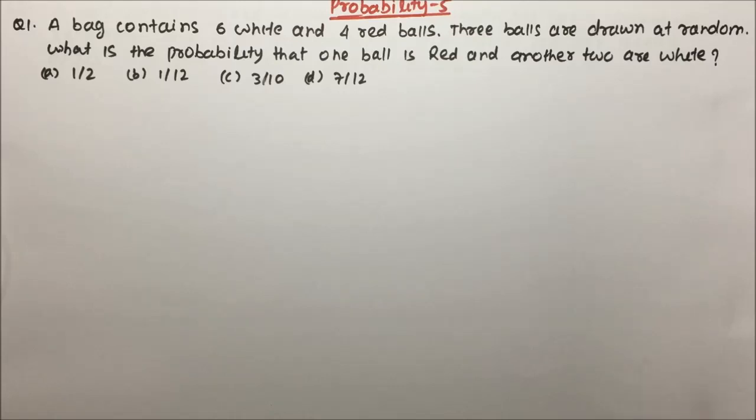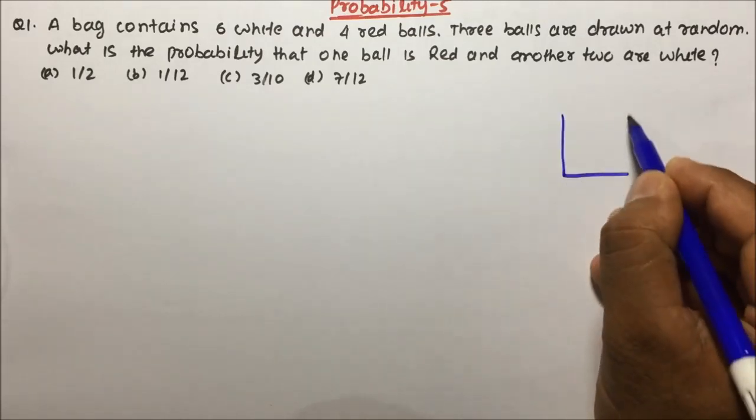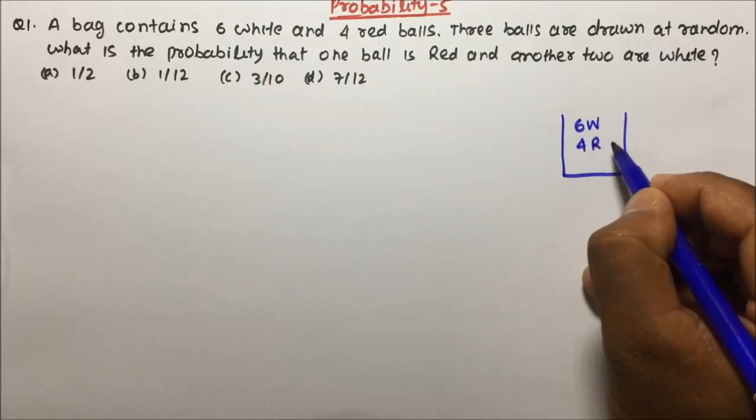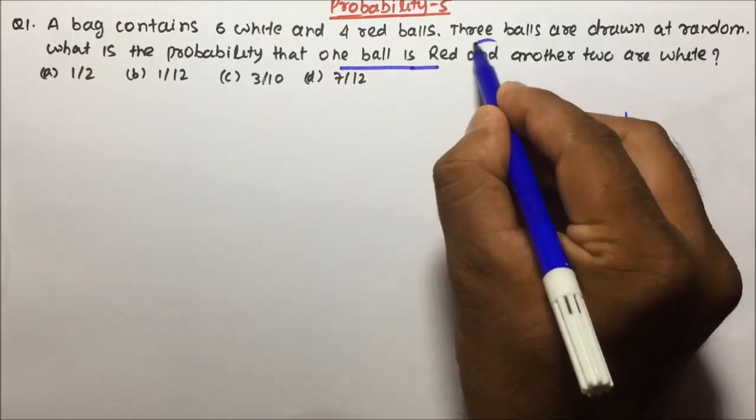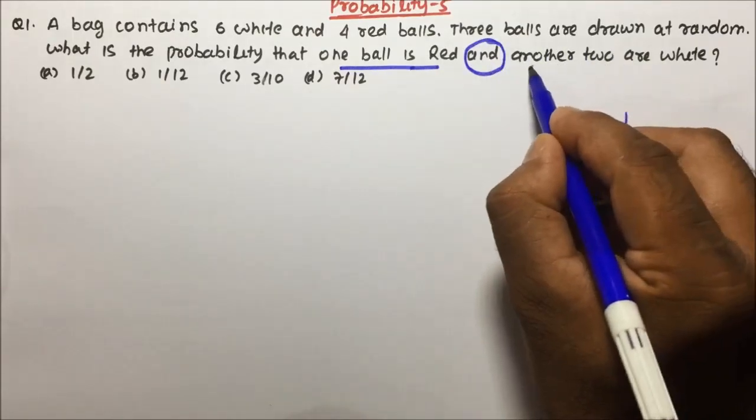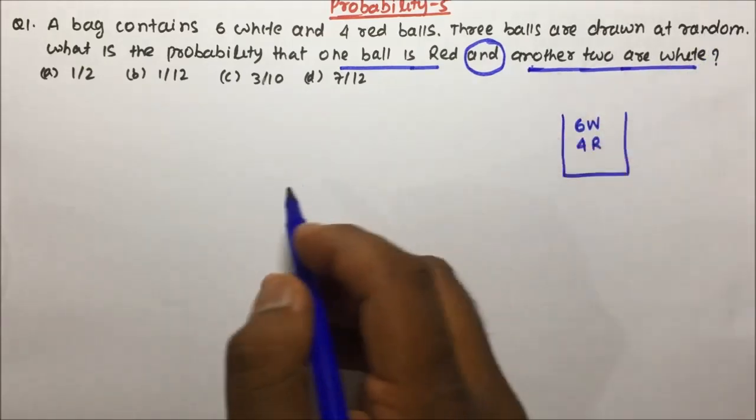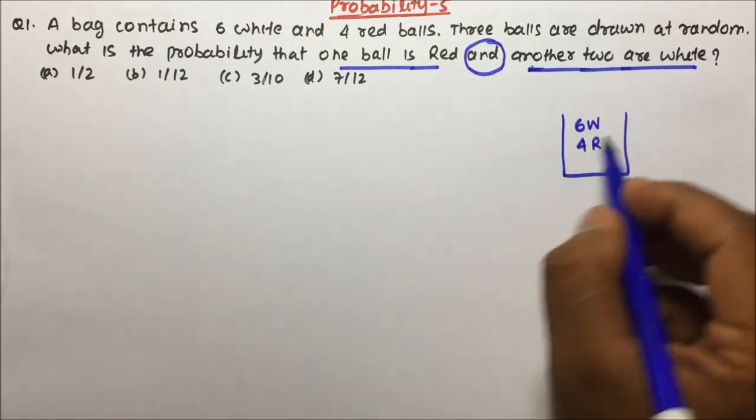So our today's questions are very important. Let us start with question number 1. A bag contains 6 white and 4 red balls. 3 balls are drawn at random. What is the probability that one ball is red and another two are white? This is the third type on the balls question. You can please watch the previous videos to understand the concept.